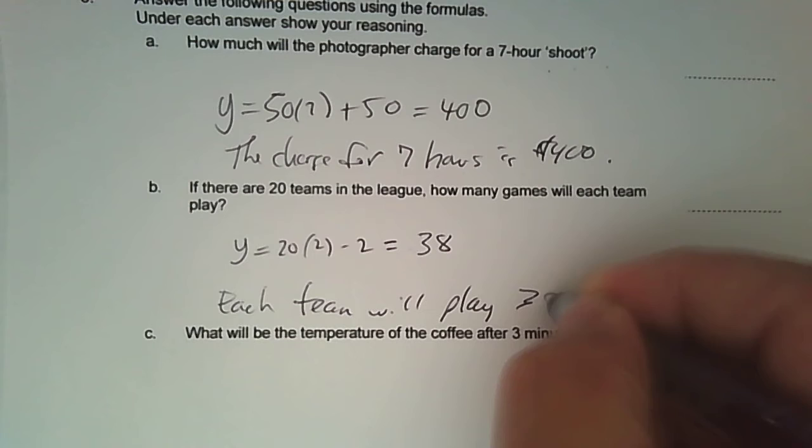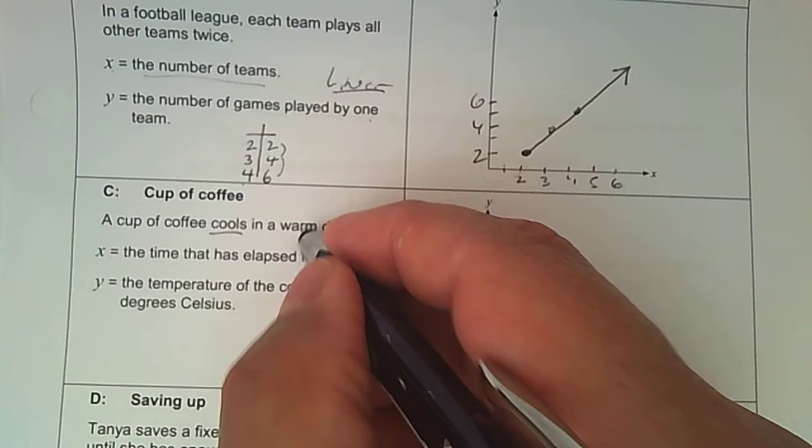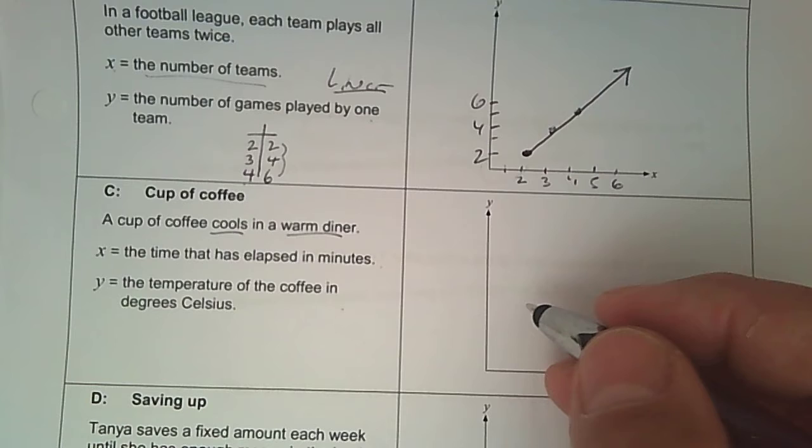All right, part C. What will the temperature of the copy view? Oh, we haven't even looked at the next one. So the next model is coffee. And a cup of coffee cools in a warm diner. So the time that is lapsed in minutes and the temperature of the coffee in Celsius. So if something's cooling, it's decreasing over time, but it starts with the temperature and then decreases.